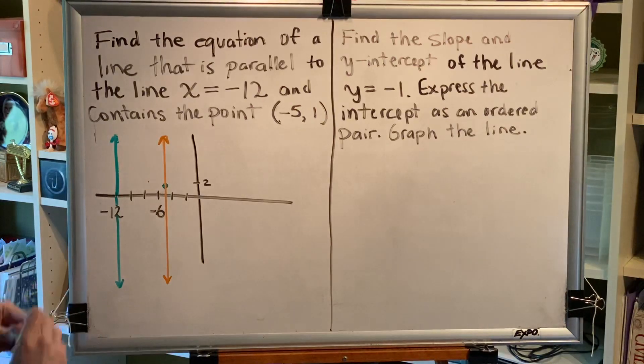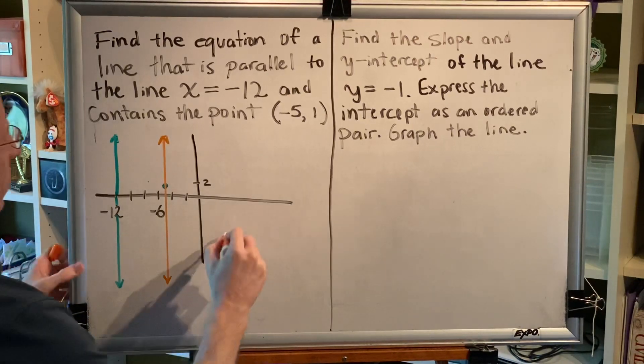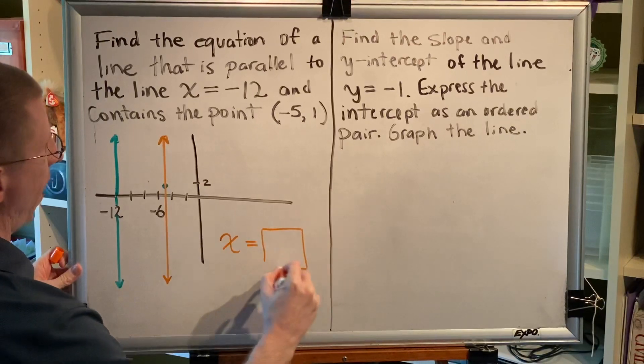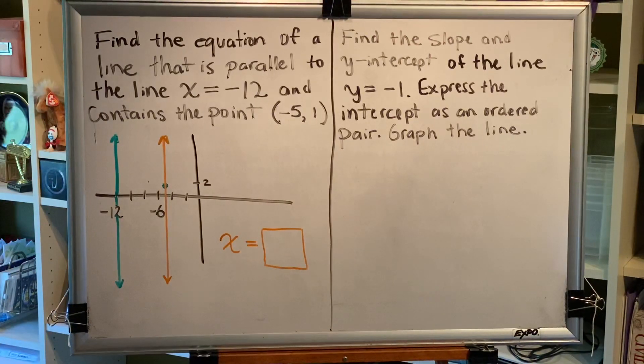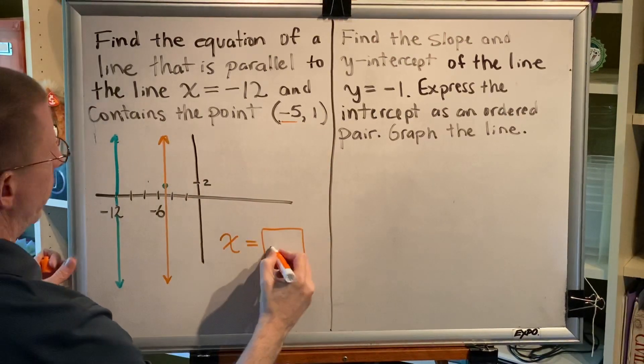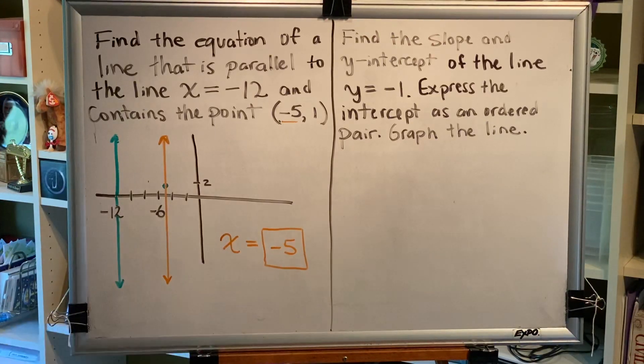So this is the line we're looking for. But what is its equation? Well, as a vertical line, its equation is x equals some number. And that number is the x coordinate of every point on the line, including this one. The x coordinate of this point is negative 5. So the equation of the line we're looking for is x equals negative 5.